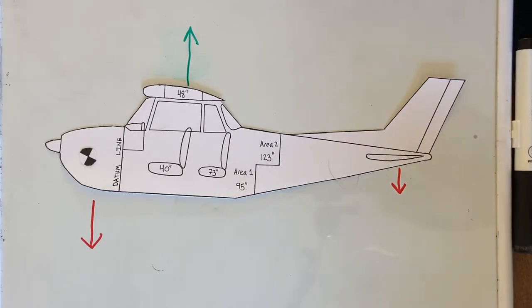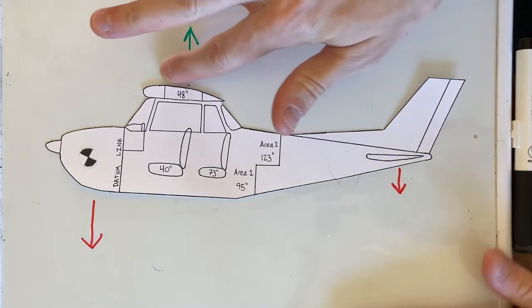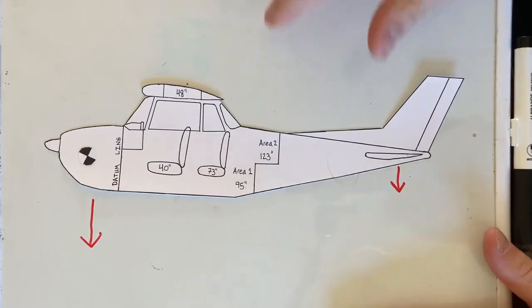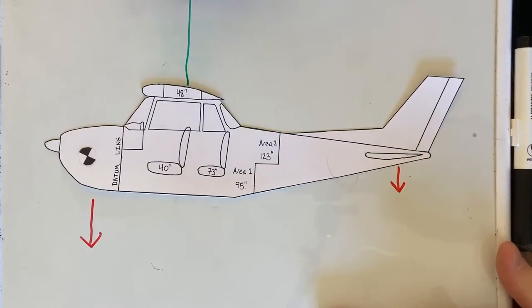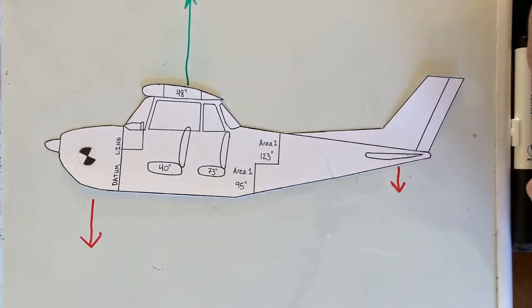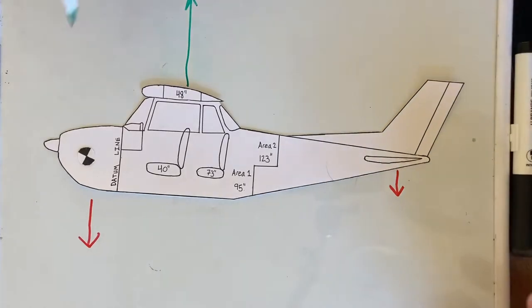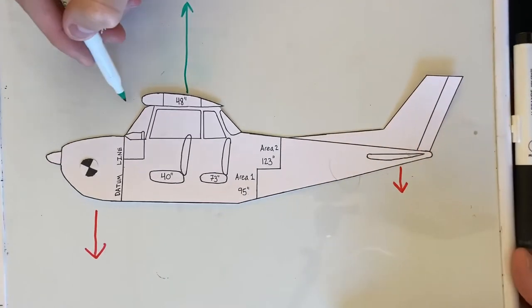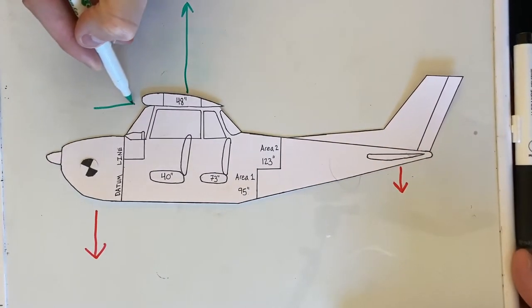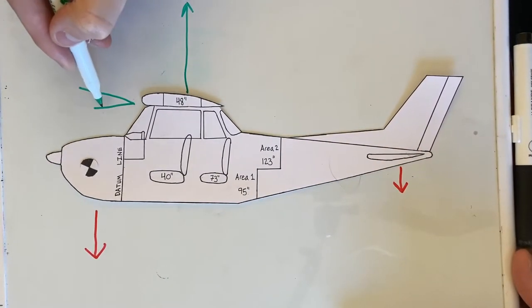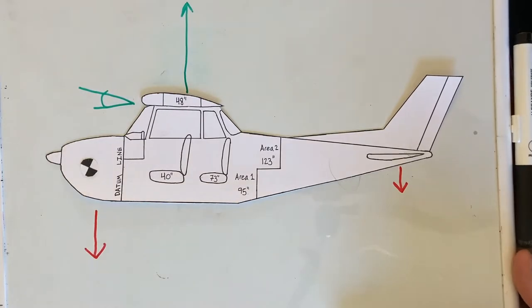So if we don't want to lose altitude, we're going to have to increase the lift to balance that out. And how do we do that? By increasing the angle of attack.